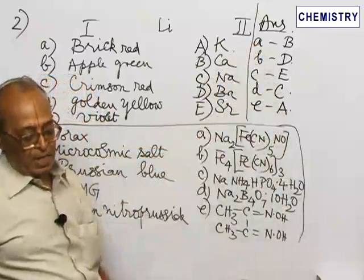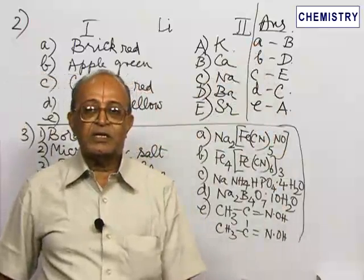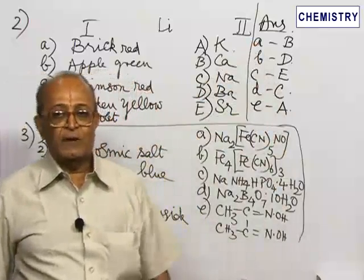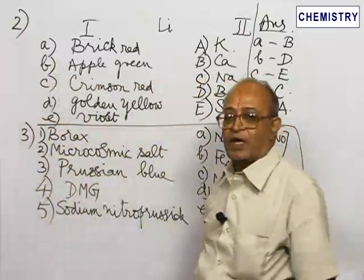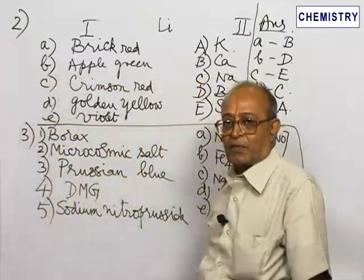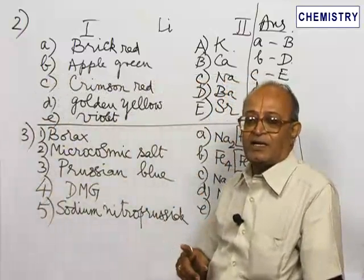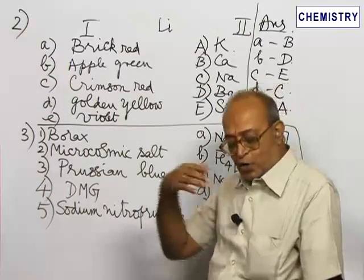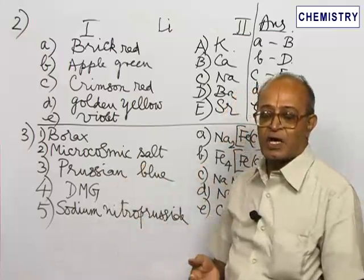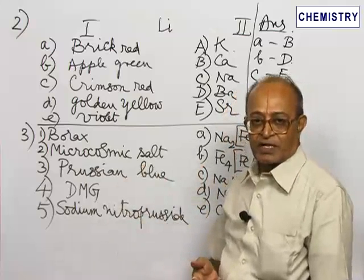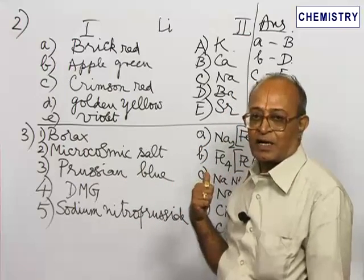Flame test in general gives an idea about the presence of metallic radicals, but these are not confirmatory tests. You have to perform some other chemical reactions, known as confirmatory tests, for confirming the presence of these metallic ions.